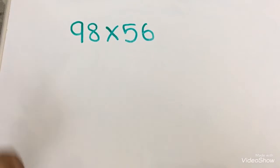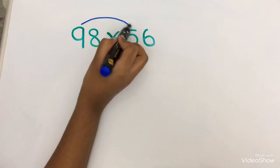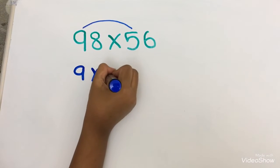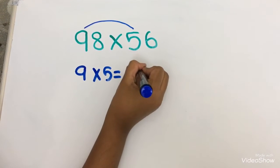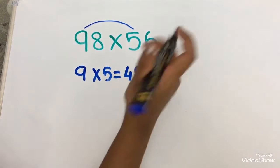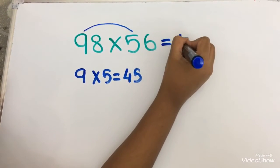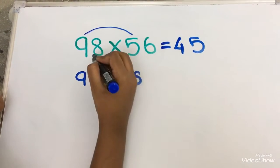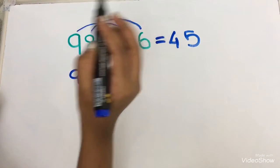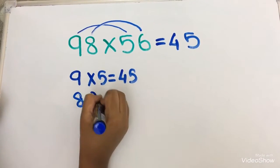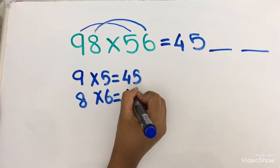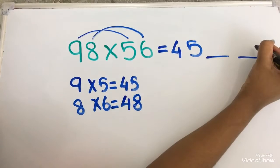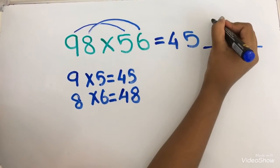Now we are going to multiply 9 into 5. 9 into 5 equals to 45. This two digit number we should write as it is. I am going to write 45. Now, 8 into 6. 8 into 6 equals to 48. This 8 number I am going to write it over here and this 4 as a reminder.